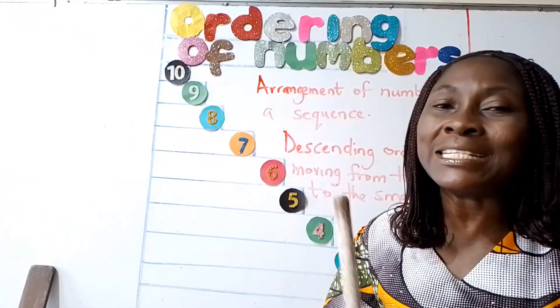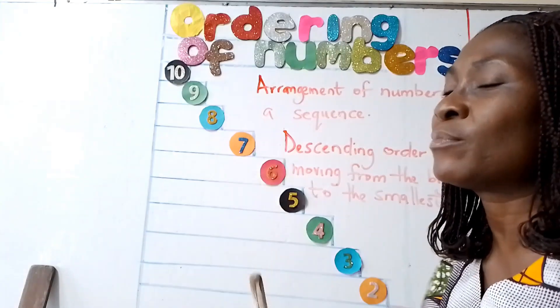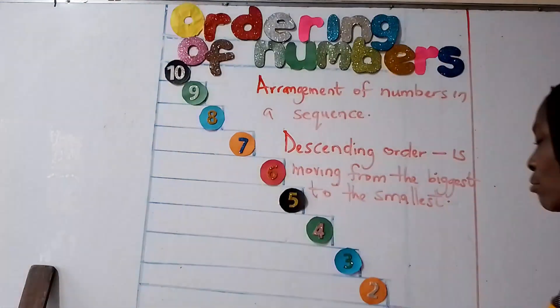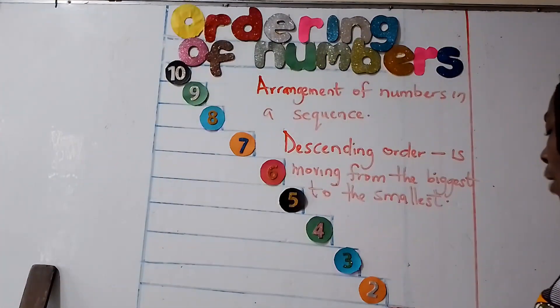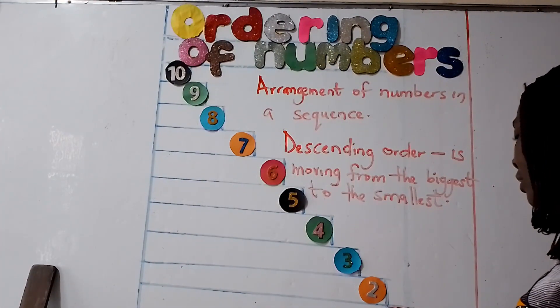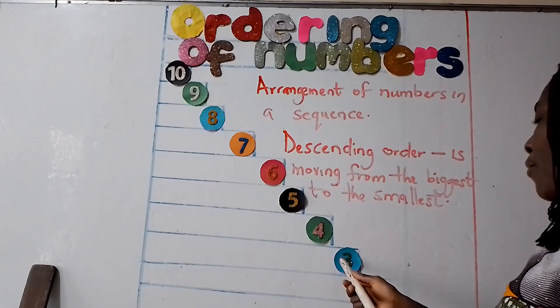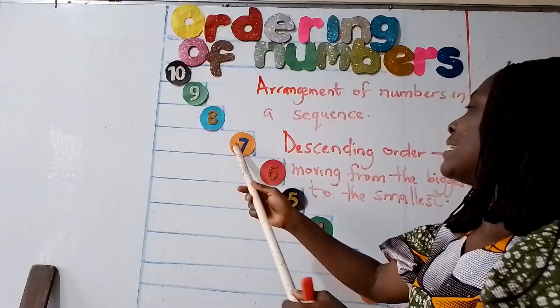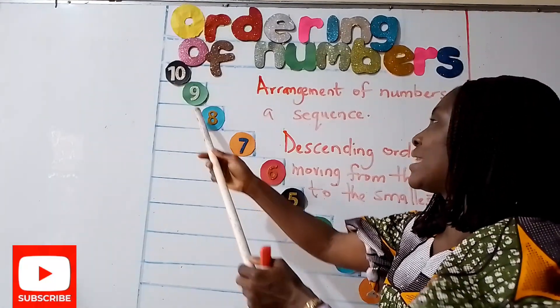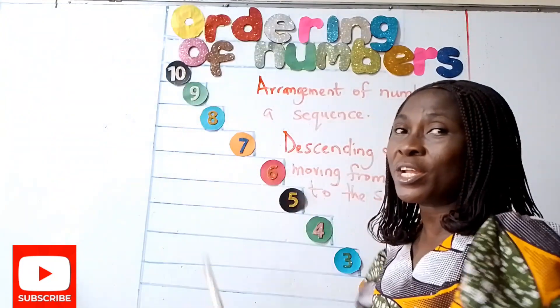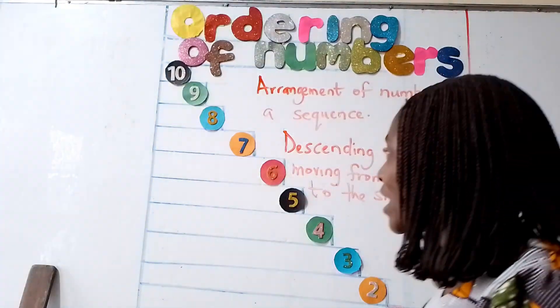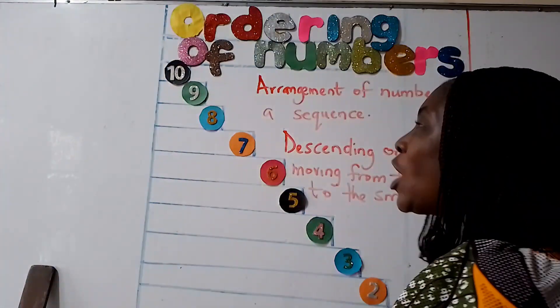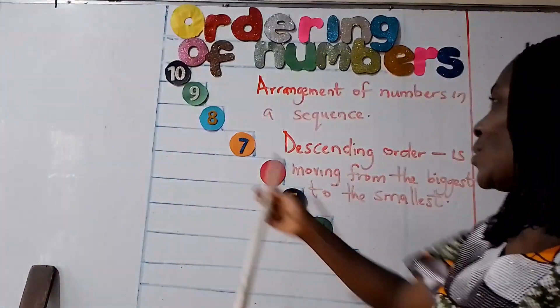And we say ascending is to move from the smallest to the biggest. Like I count from the smallest to the biggest. Count from my 1 to 10. 1, 2, 3, 4, 5, 6, 7, 8, 9, 10. What do you notice? I am moving up the stairs from 1 to 10.